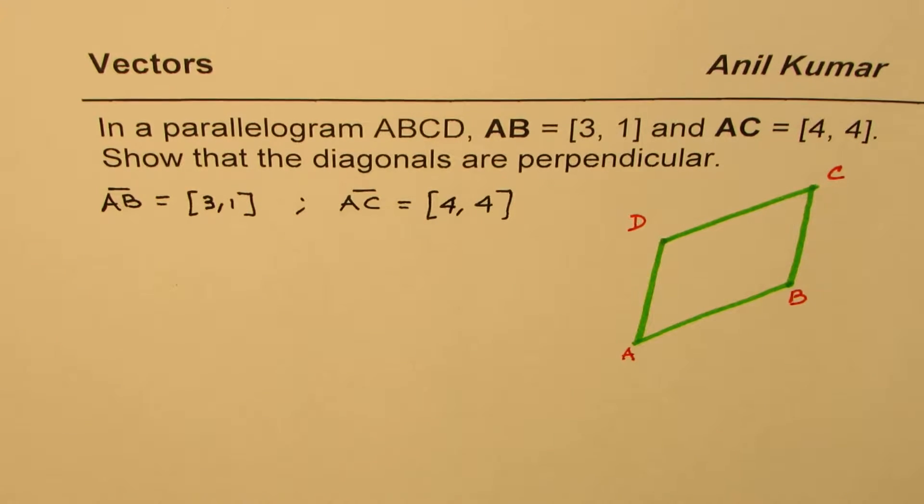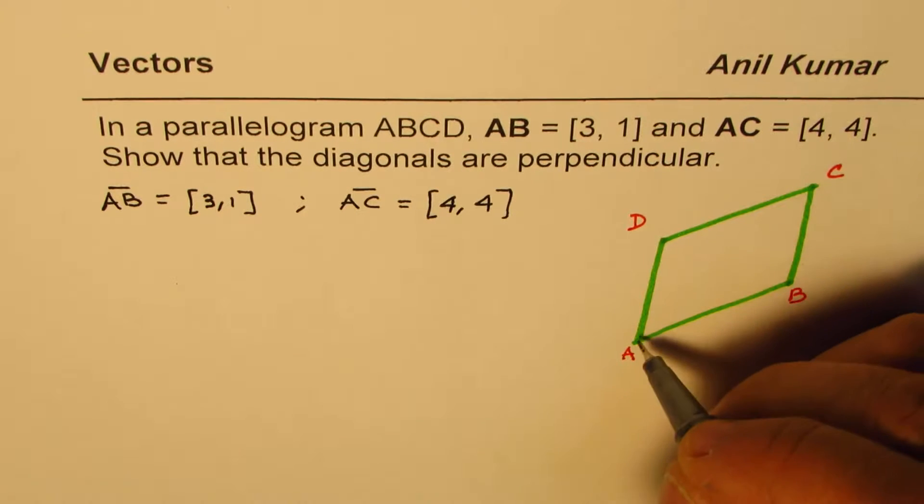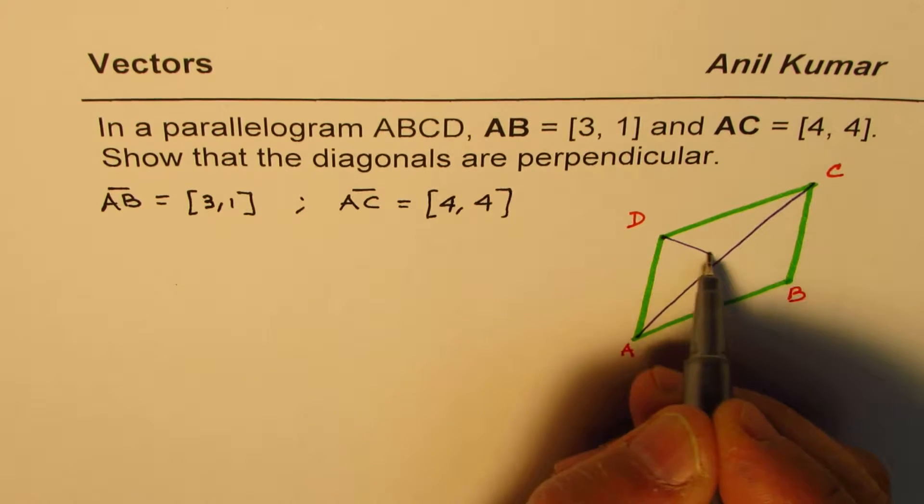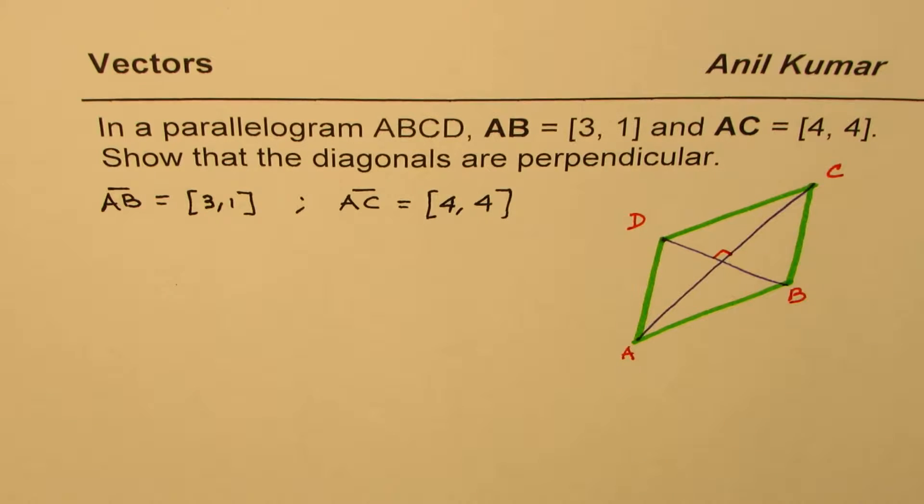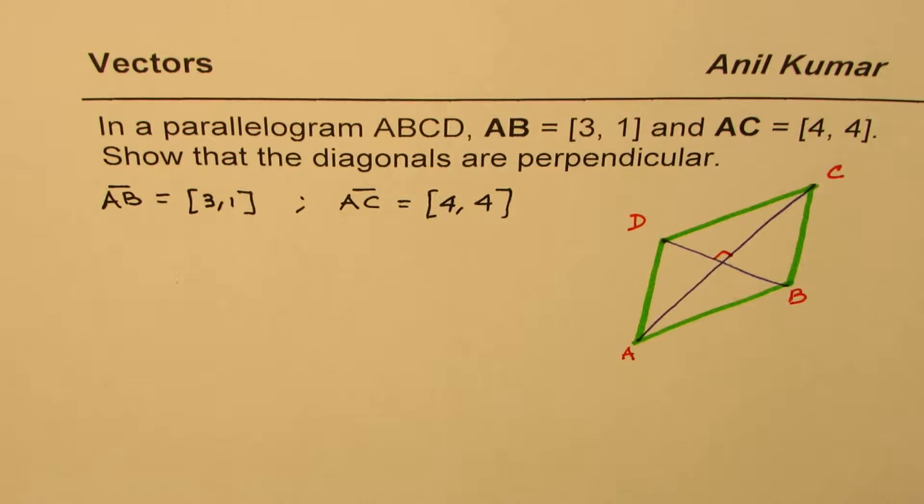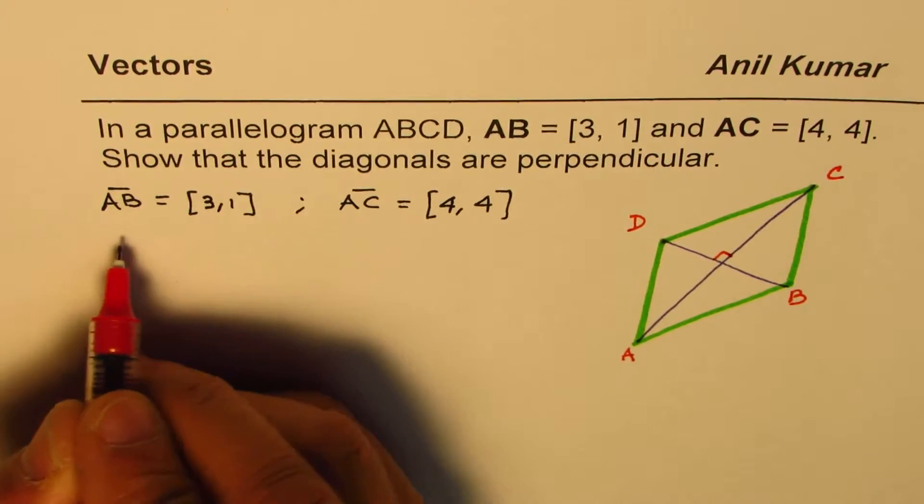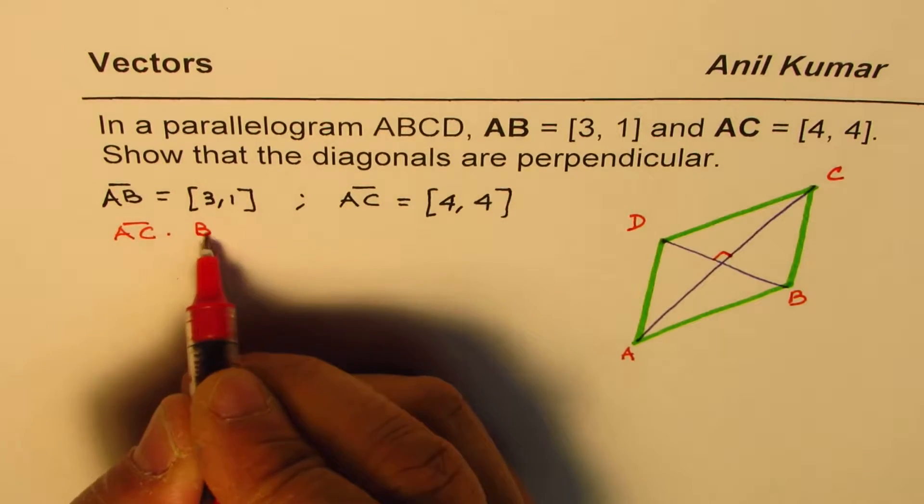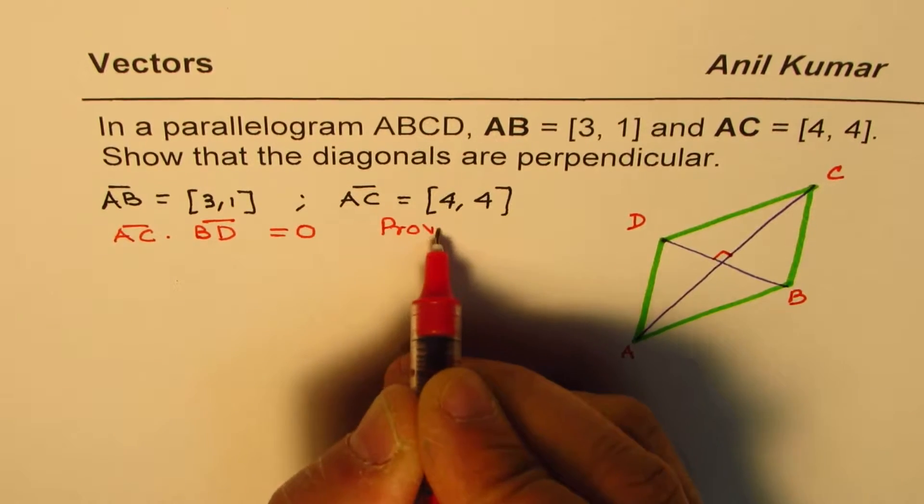Now the question is, show that the diagonals are perpendicular. So it has two diagonals. One is AC and the other one is BD. So we have to show that these are perpendicular. You can always pause the video, answer the question, and then look into my suggestions.